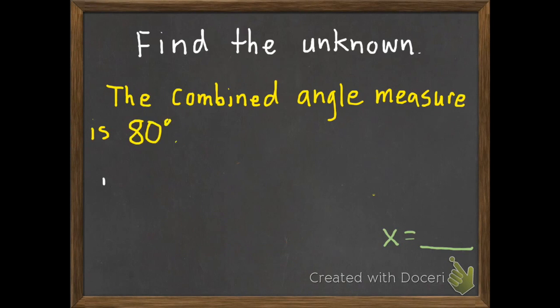And last of all, if the combined angle measure is 80 degrees, what is the unknown angle when one of our angles is 60 degrees? Bring these into class tomorrow, and enjoy the rest of your day.